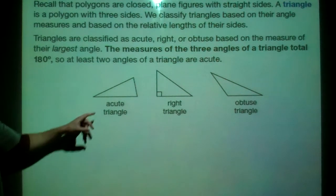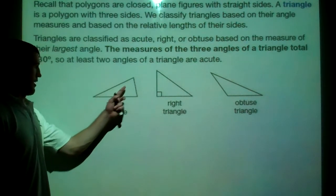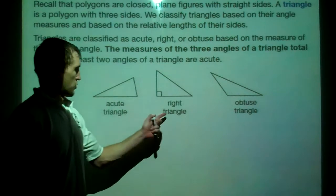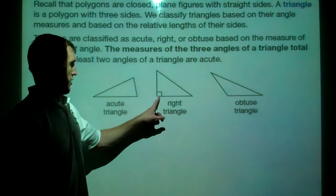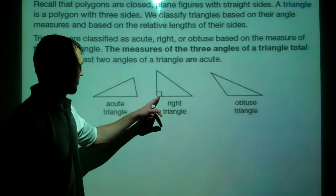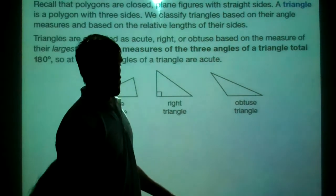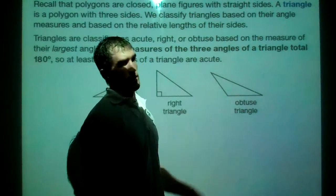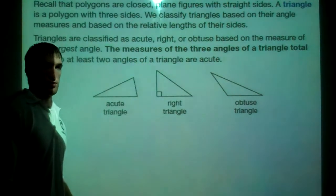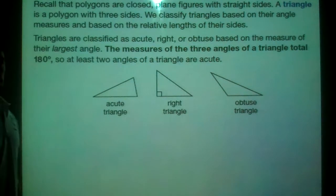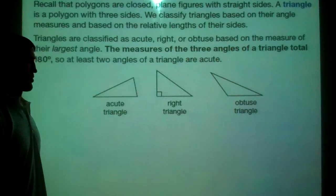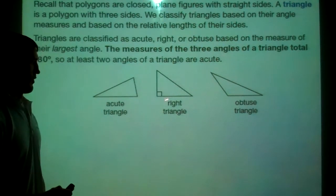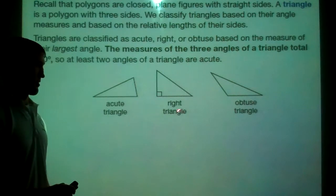An acute triangle has every angle less than 90 degrees. A right triangle has a right angle — a 90 degree angle — in it. And an obtuse triangle has one angle greater than 90 degrees. So if you have one that's greater than 90, it's obtuse. If they're all less than 90, it's acute. And if you have one that is exactly 90, it's a right triangle.